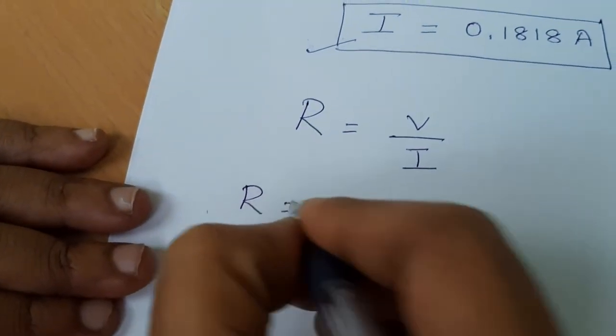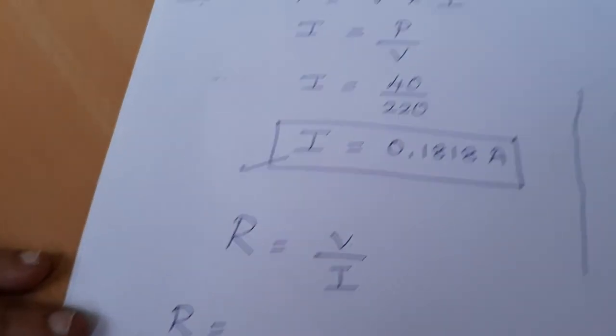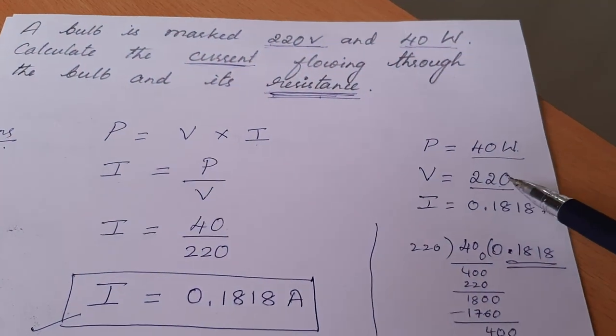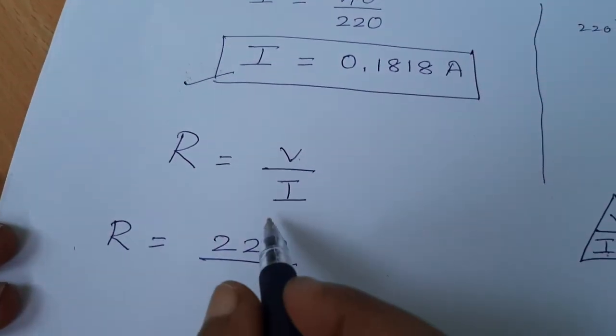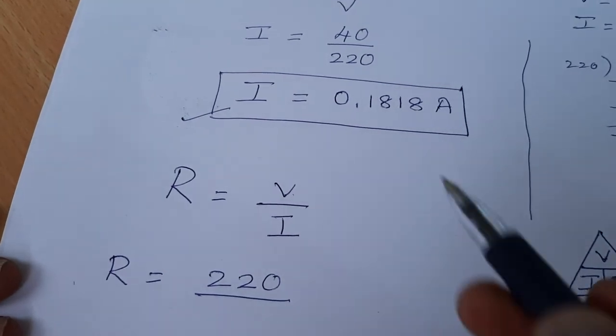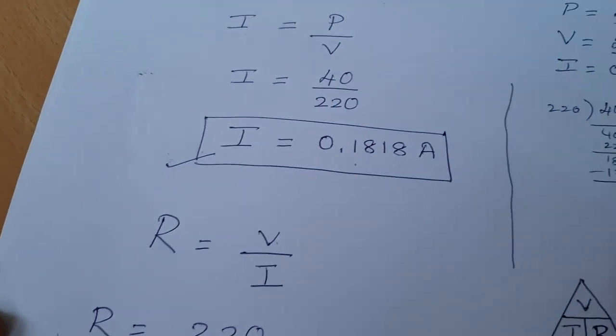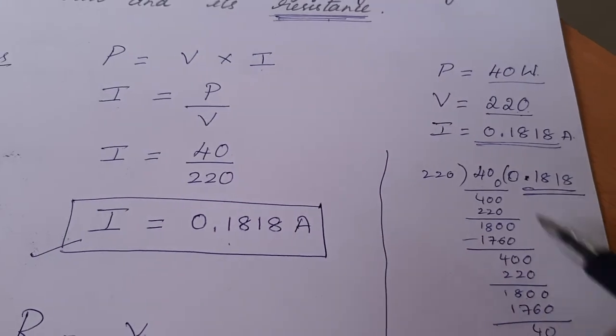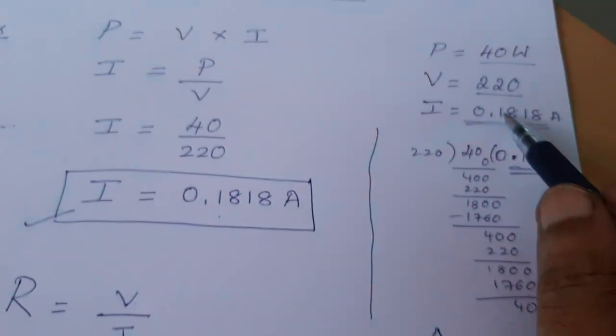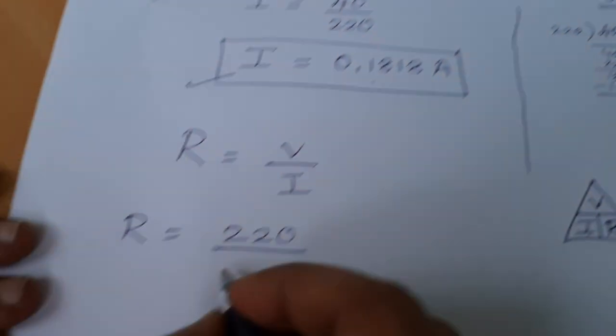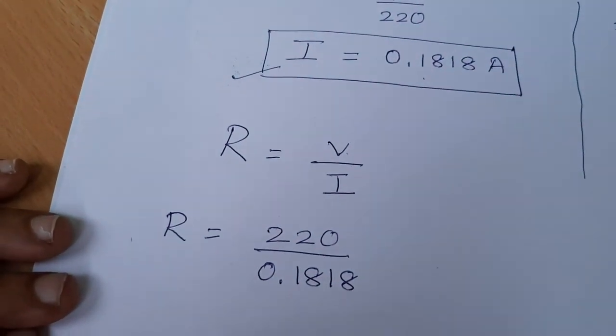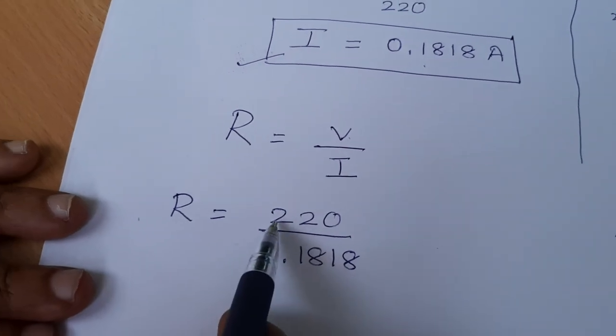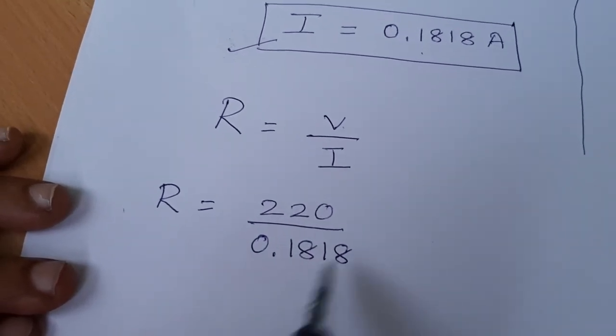Now let us write the formula for resistance. R equals V by I. What is V? It has been given in the question itself: it is 220. So R equals 220 by what is I? We have already calculated here, it is 0.1818.